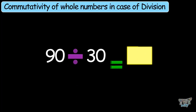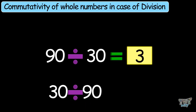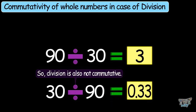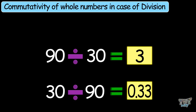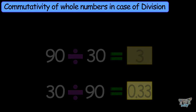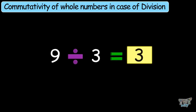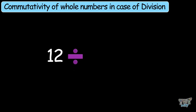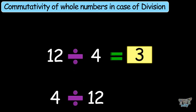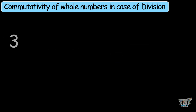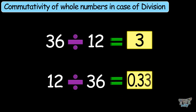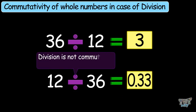90 divided by 30 equals 3. Now 30 divided by 90 — the answer is not 3, it is 0.33. So division is not commutative; you cannot divide numbers in any order. Let's have some more examples: 9 divided by 3 is 3, but 3 divided by 9 is not 3. 12 divided by 4 is 3, but 4 divided by 12 is not 3. 36 divided by 12 is 3, but 12 divided by 36 is also not 3. So division for whole numbers is not commutative.